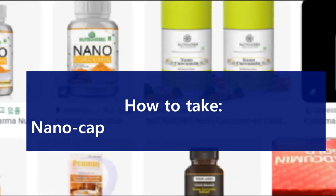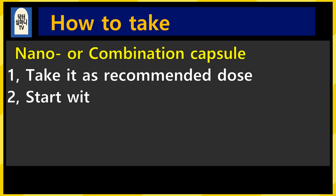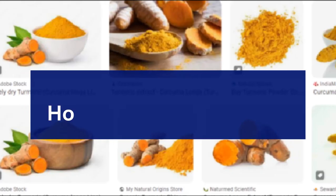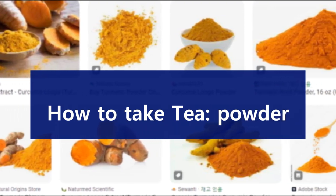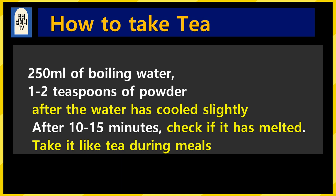If you decide to take capsules or tablets, it is recommended to buy nano capsules or a combination product. After getting it, be sure to read the recommended dose carefully. Start with the smallest amount and observe your reaction while taking it, then increase slowly. You should try taking it for 1 to 2 months. Those who want to take tea can choose a powder product. Use 250cc of boiling water cooled slightly to about 80°C — at high temperatures there is a risk of losing active ingredients. Add 1 to 2 teaspoons of turmeric powder and make sure the powder dissolves well. It is good to take it during meals. All of these processes help prevent the low absorption rate.